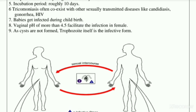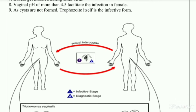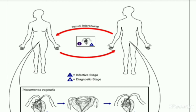The normal vaginal pH is from 3.8 to 4.5, which is acidic. When the female is infected with this parasitic protozoan, the vaginal pH becomes more than 4.5, which indicates the female is infected by trichomoniasis. Cysts are not found — the trophozoite itself is the infective form.